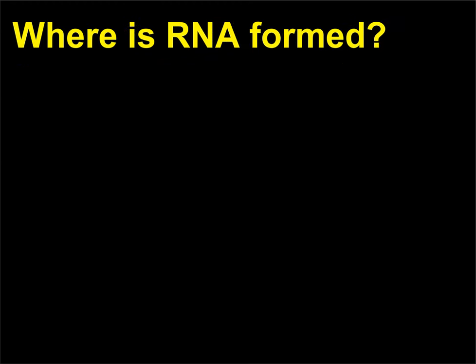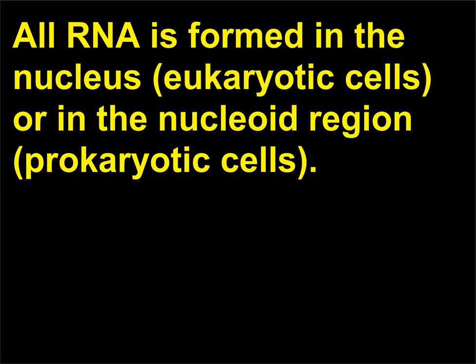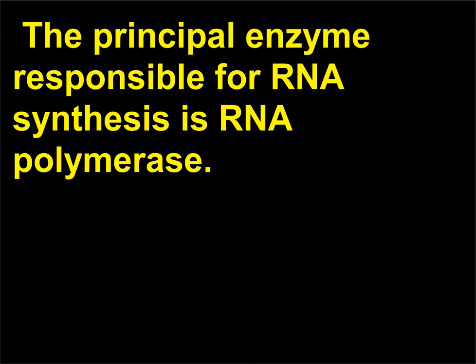Where is RNA formed? All RNA is formed in the nucleus of eukaryotic cells, or in the nucleoid region of prokaryotic cells. The principal enzyme responsible for RNA synthesis is RNA polymerase.